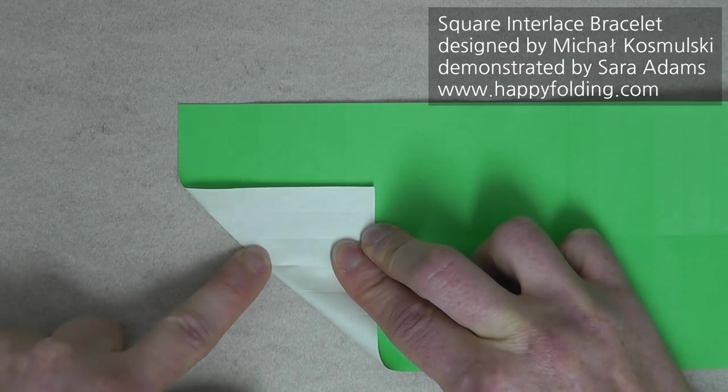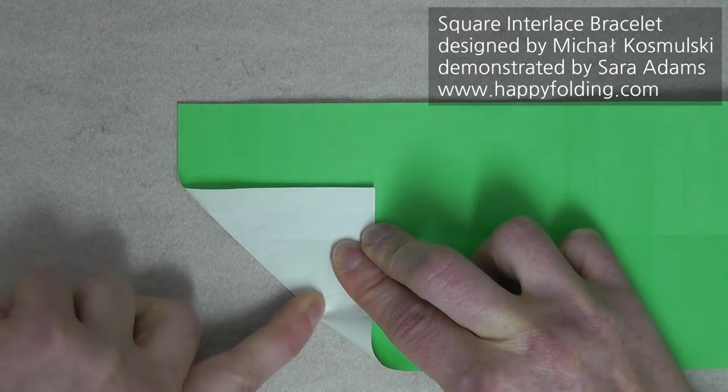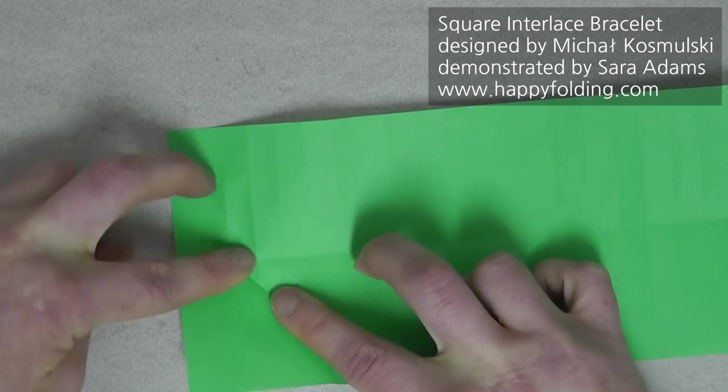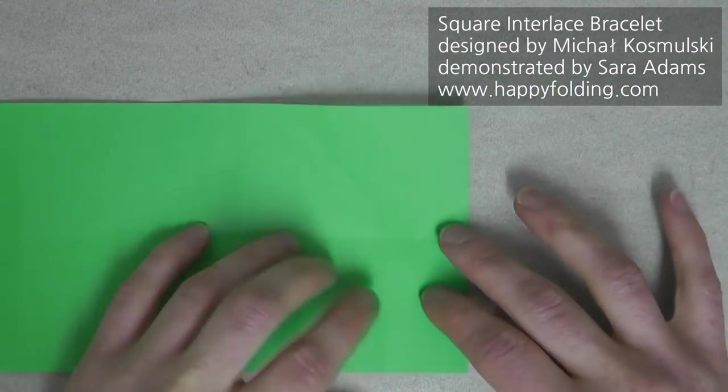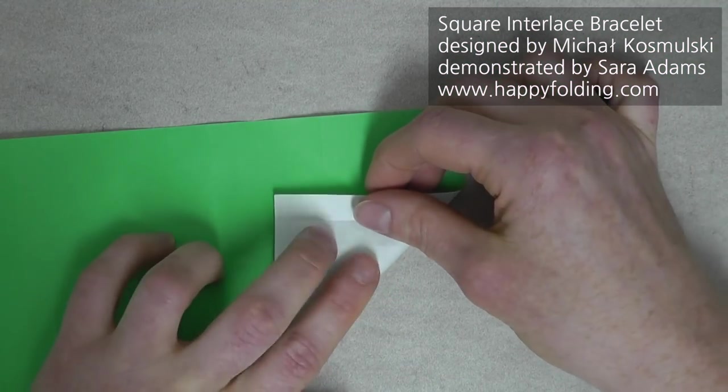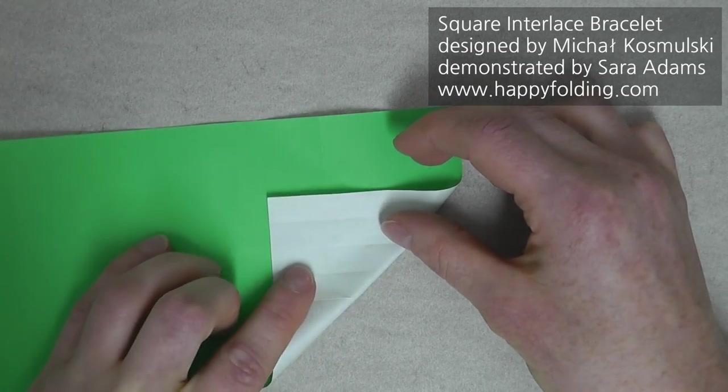Then we're going to crease down one, two, three of these sections. And then we do that in the top two. I'm just going to rotate it, because I find it easier to work precisely that way. Do whatever works best for you.